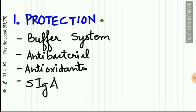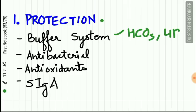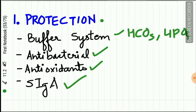First, protection: constant saliva flow washes the oral mucosa. A strong buffering system formed by HCO3 and HPO4 increases the oral pH and prevents cariogenic microorganism growth. Antibacterial enzymes, antioxidants such as uric acid and ascorbic acid, and secretory immunoglobulin also help in protection.